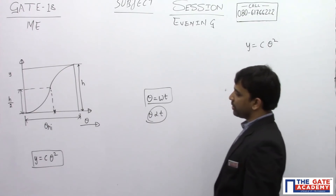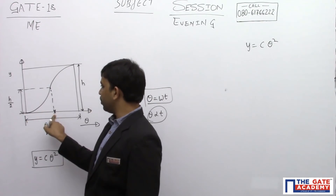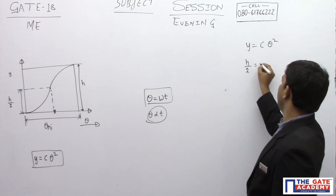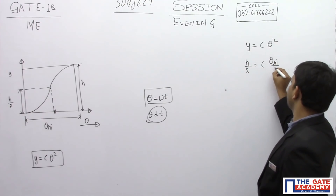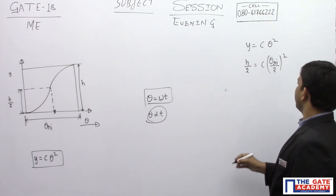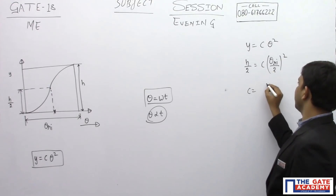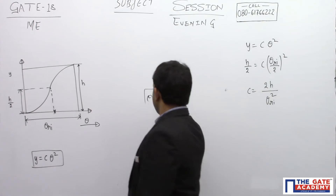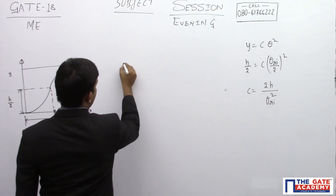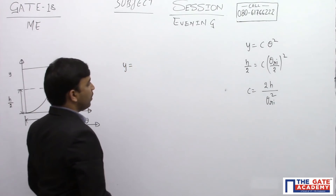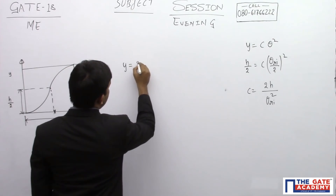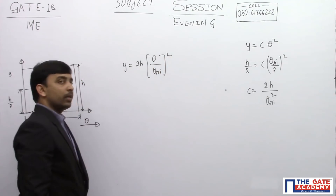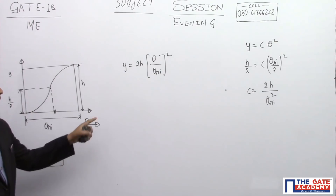To find the constant, I use the known condition: when theta equals theta_ri/2, y equals h/2. Substituting into y = constant × theta², we get h/2 = constant × (theta_ri/2)². Solving for the constant gives 2h divided by theta_ri squared. So the displacement of the follower as a function of cam rotation is: y = (2h / theta_ri²) × theta².